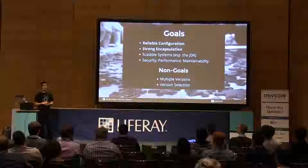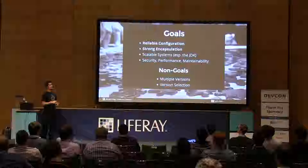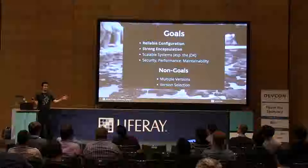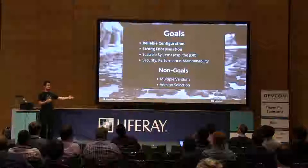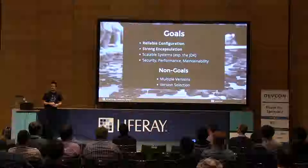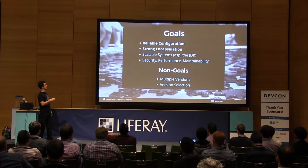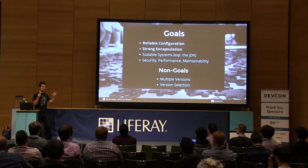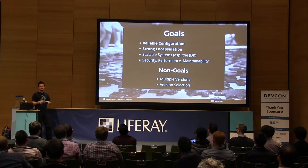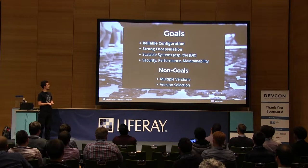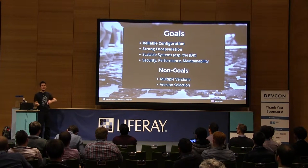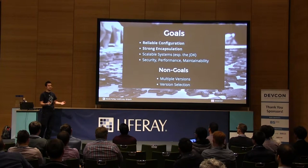Let's have a look at the goals of Project Jigsaw. The first one is reliable configuration: if I have a set of JARs, does this configuration make sense? Can I launch this configuration without JARs missing and the program crashing at runtime with a NoClassDefFoundError? The second goal is strong encapsulation, which Peter talked about earlier — for a module to work, it has to hide and encapsulate internals, which was not really possible up to now. A scalable system would also be nice — for a back-end, you could have a JRE that does not contain Swing, for example.